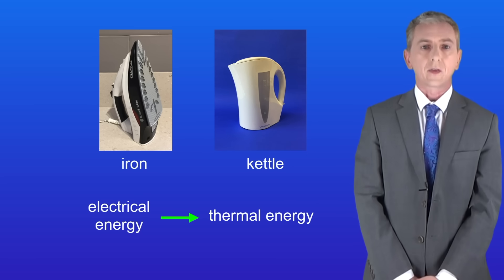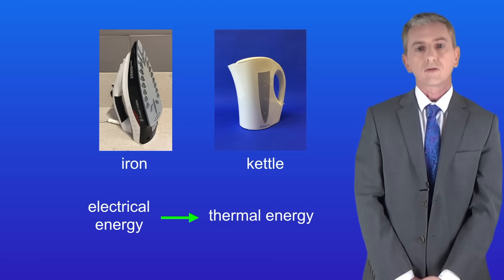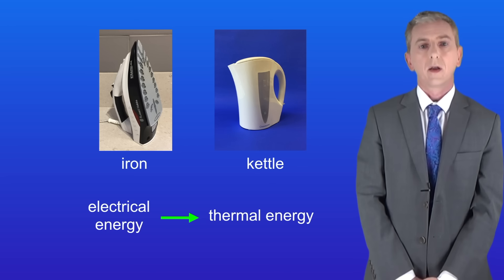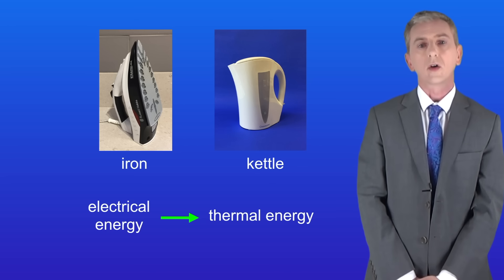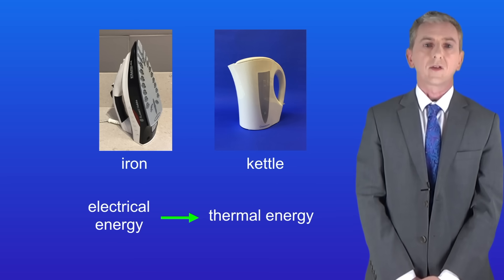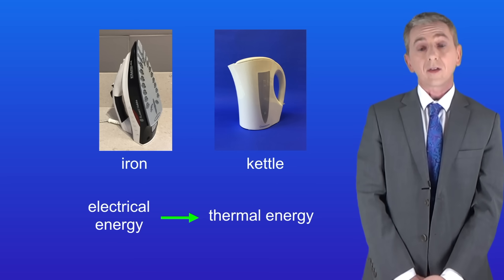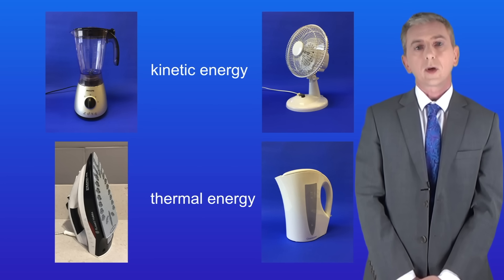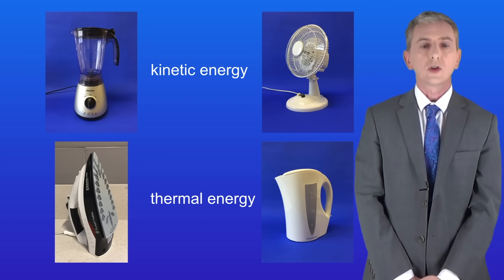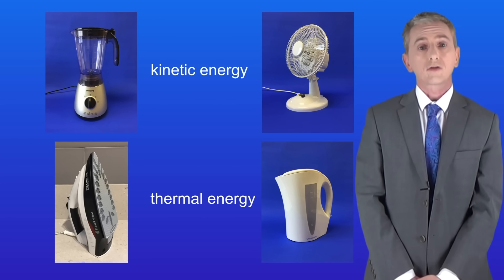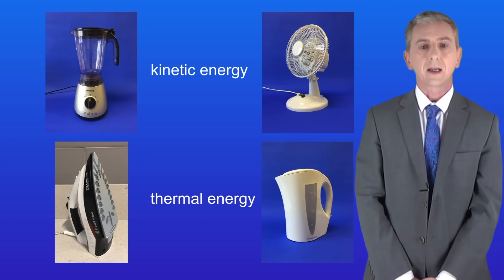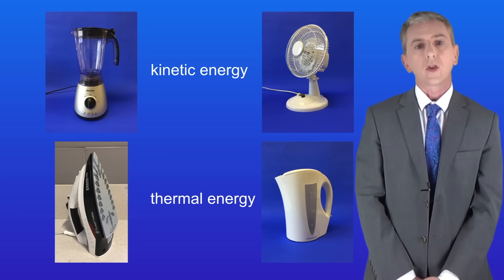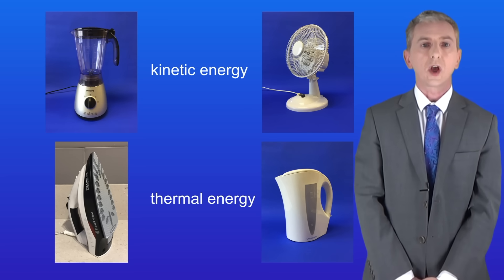Looking at the iron and the kettle, both of these use electrical energy from the mains but they transfer it into thermal energy. That's because both of these appliances are designed to get hot. Neither of these appliances generate kinetic energy — that's not what they're designed to do. So we can divide appliances into two main categories: those that transfer electrical energy into kinetic energy and those that transfer electrical energy into thermal energy.